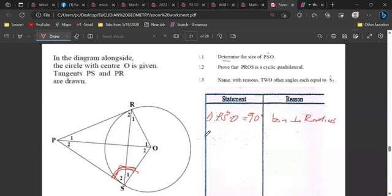Okay. And then we got this one as 90. So this is our given angle. The next one, they say prove that PROS is a cyclic quadrilateral, meaning we are talking about P, R, O, this thing here, it's a cyclic quadrilateral.